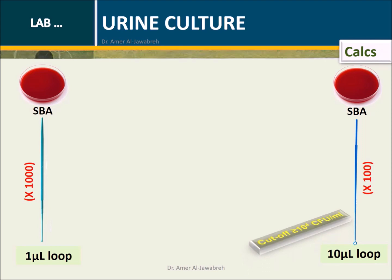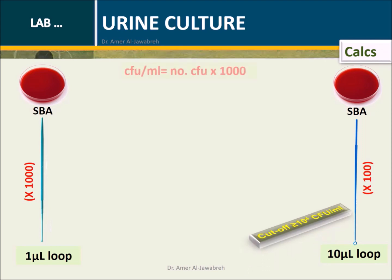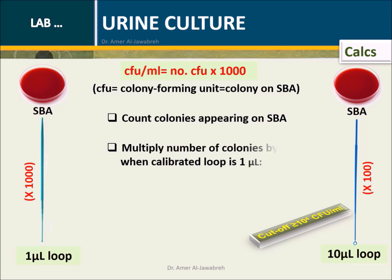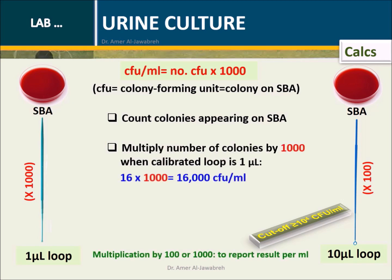Calculations: CFU per ml equals number of CFU times 1000. Count colonies appearing on SBA. Multiply the number of colonies by 1000 when the calibrated loop is 1 microliter, or multiply by 100 when the calibrated loop is 10 microliters.